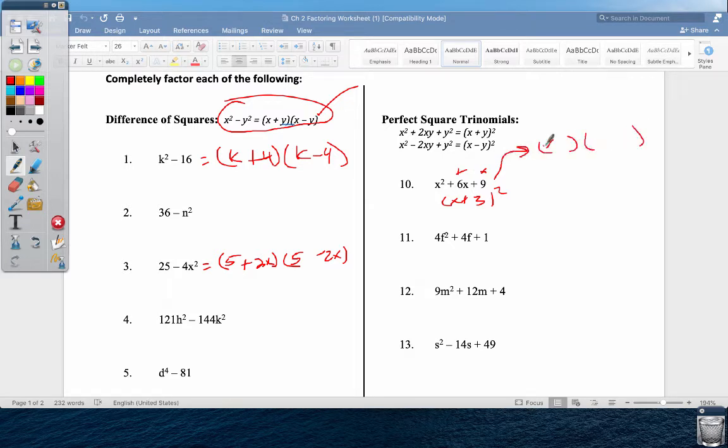You can also do what do you multiply for nine and add for six? It's going to be three and three, and you can do it that way as well. So a few different ones there. Shouldn't be too bad.